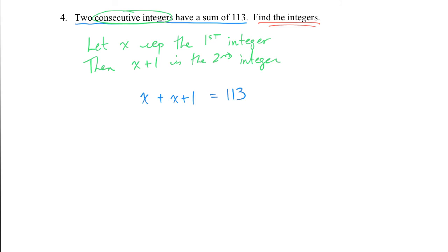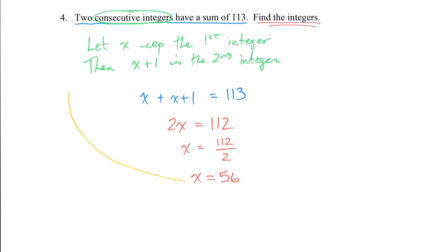Solving: collect the x's to get 2x + 1 = 113, subtract 1 to get 2x = 112, divide by 2 to get x = 56. x was the first integer, so the first is 56 and the second is x + 1 = 57. Therefore, the integers are 56 and 57. That is a perfect solution: you defined your variable, created your equation, solved it, and wrote your therefore statement.